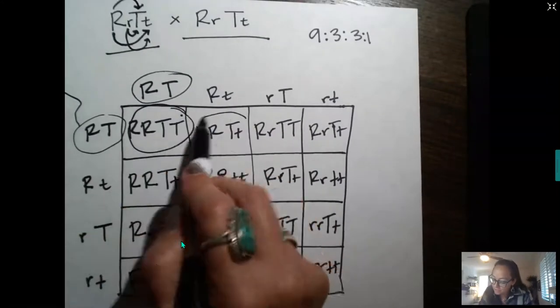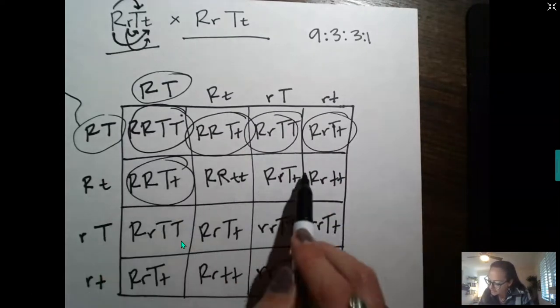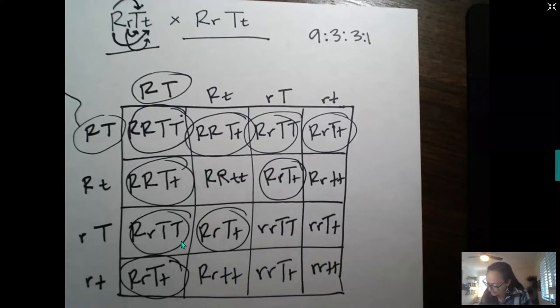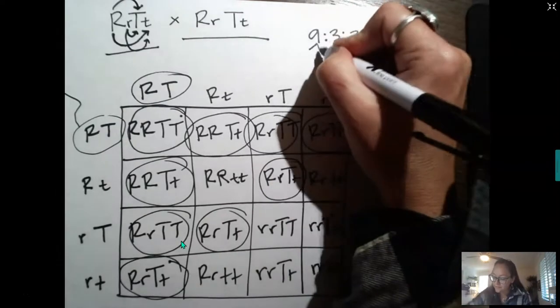I see 1, 2, 3, 4, 5, 6, 7, 8, 9. So here, for individuals that are dominant for both traits, I found my 9.